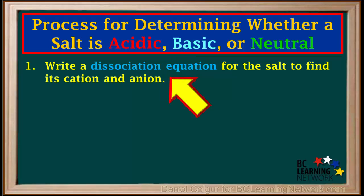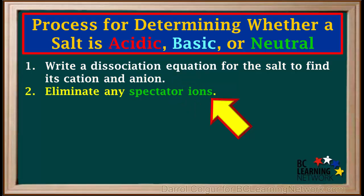Step 1 is to write a dissociation equation for the salt in order to determine what its cation and anion are. Step 2 is to eliminate any spectator ions.